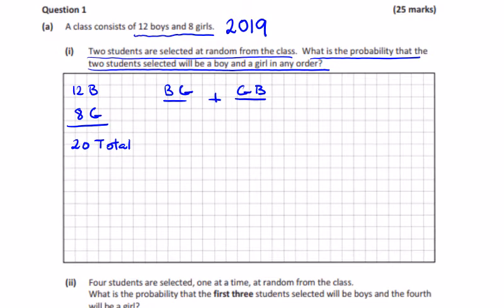So the probability of a boy is 12 over 20, followed by a girl. There's 8 girls and there's 19 students left. We'd have to add a girl first, which would be 8 over 20, by the probability of a boy, which would be 12 over 19. And you can see here we have the same numerators and denominators, so we have 8 times 12, or 96, over 20 times 19, which is 380.